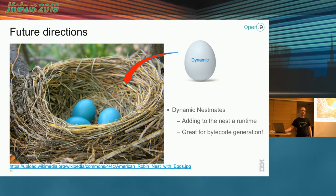Where do we go with Nestmates in the future? I said it was a bi-directional check, but where we'd really like to take this is for some trusted APIs to allow them to insert into the nest dynamically. Today people do things like use Unsafe.defineAnonymousClass to get around some of these access checks and do some other slightly crazier things, and we'd like to make that a standard API. The way to do that is probably through method handles lookup, providing some new APIs there that'll let you dynamically inject into the nest. Keep your eyes peeled for some future changes that way.